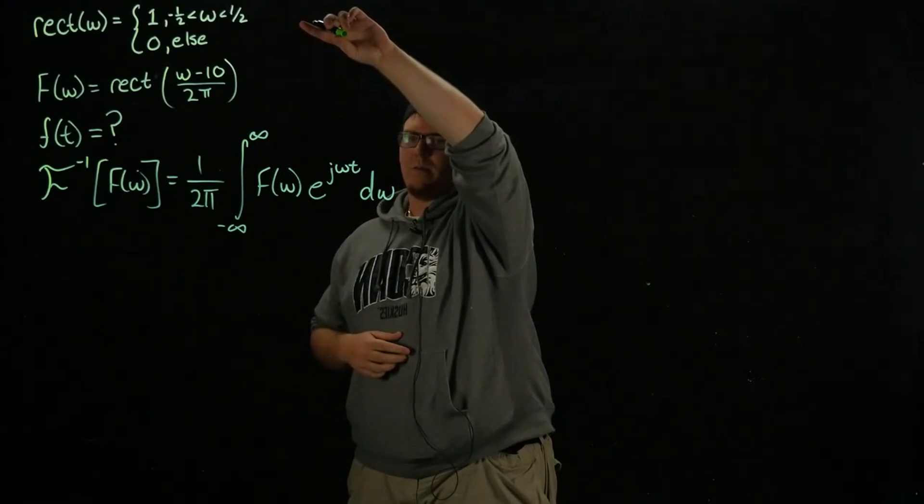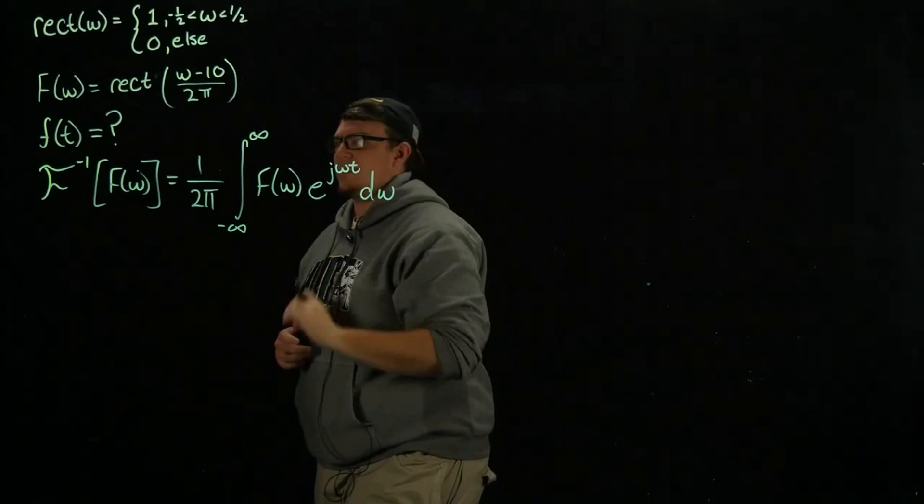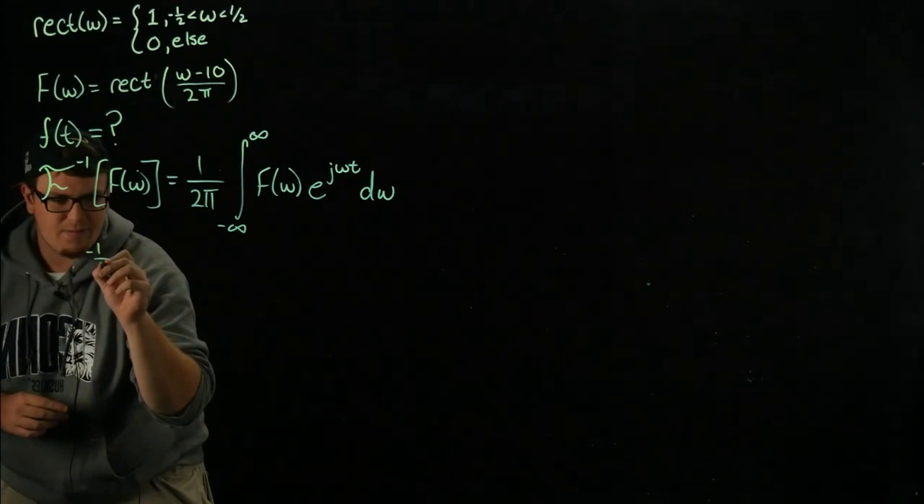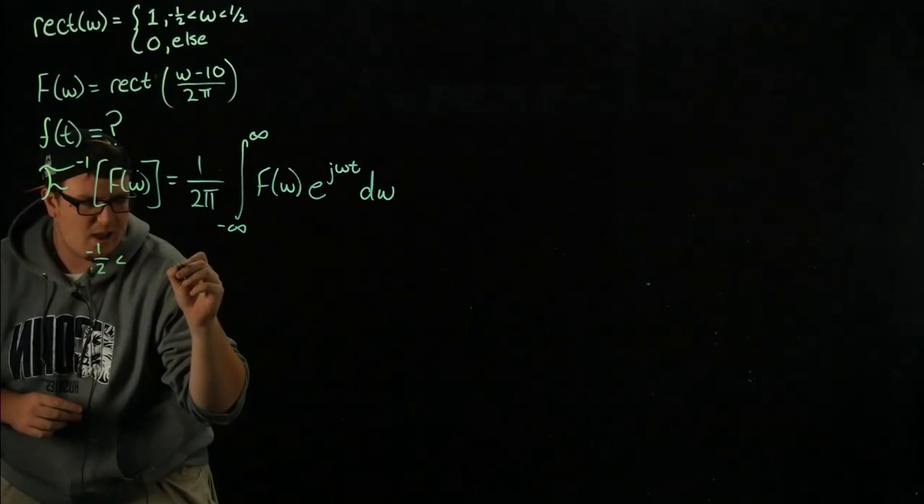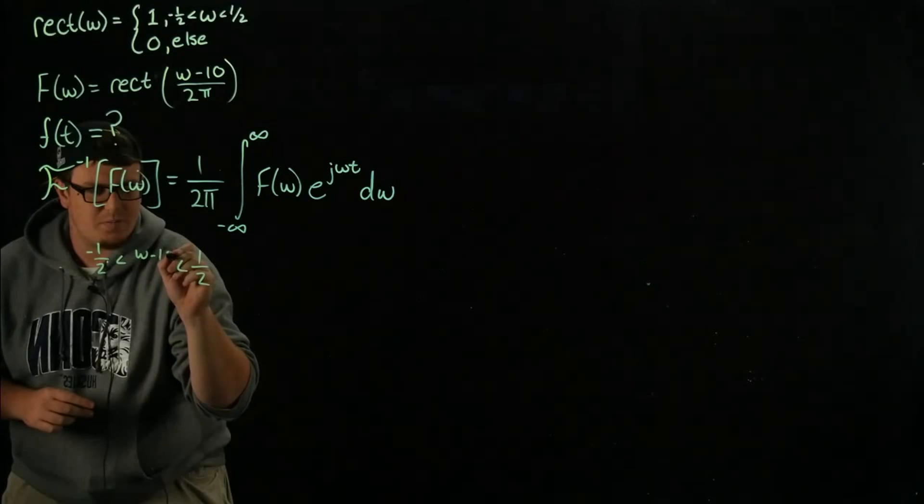The general one is it's one between negative one half and positive one half. Let's see what happens here. Between negative one half and positive one half we have omega minus 10 over 2 pi.